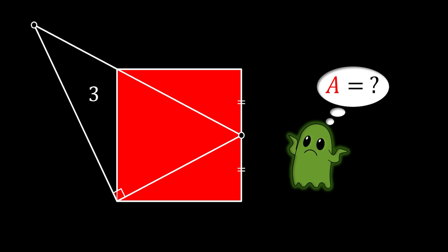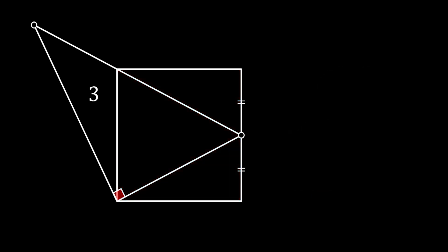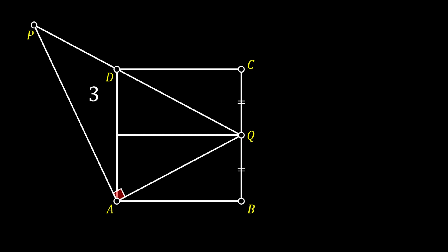Let's solve this one. First, I'm going to start by labeling all the vertices of our square as A, B, C, and D. Then I will label the midpoint on the right side of the square as Q, and I will label the remaining vertex of our big right triangle as P. Now let's pull a vertical line from point Q to the left side of the square, and let's label this intersection as O.